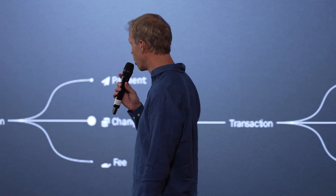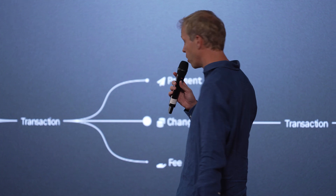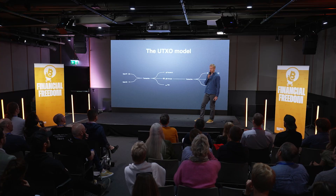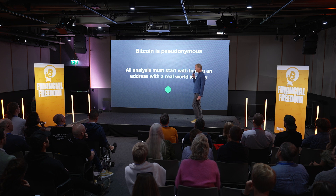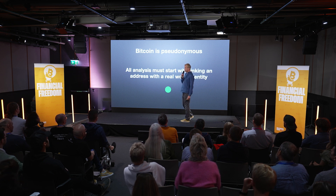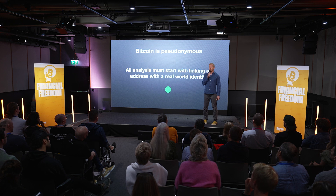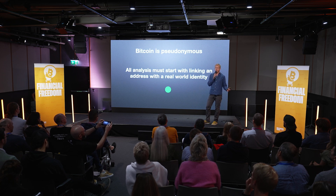It's really important to internalize what is actually going on with the UTXO model. The second principle we need to consider is that Bitcoin is a pseudonymous system. That means any useful analysis on Bitcoin must start with tying a real-world identity to the otherwise arbitrary letters and numbers that make up an address. That link needs to be made in order for us to be able to do anything.